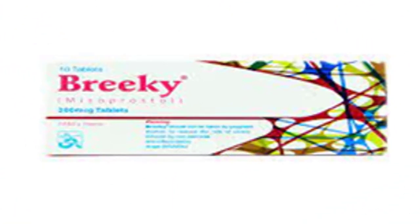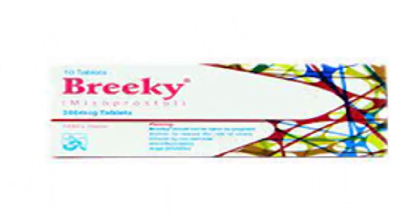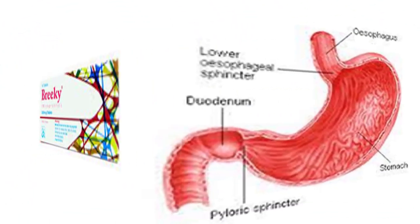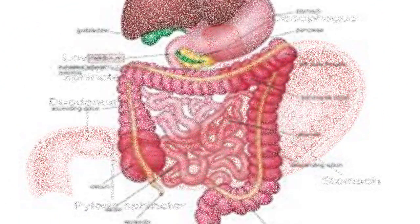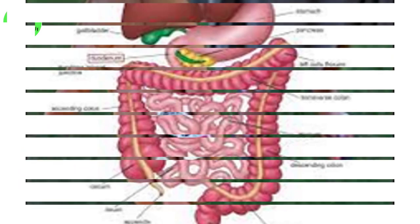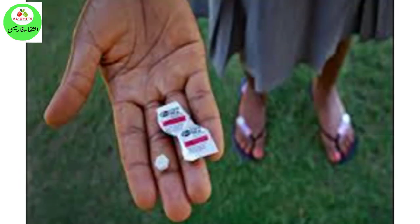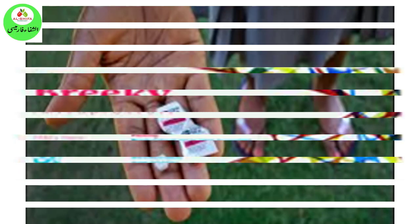Overview of Breaky Tablet. Breaky Tablet is used to treat ulcers in the stomach and duodenum. It may also be combined with mifepristone to induce abortion.